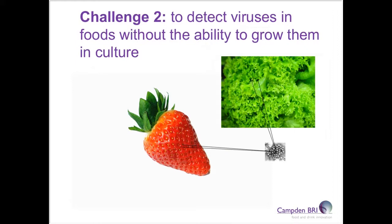The second challenge is detection of viruses in a laboratory setting. We know contamination occurs, but how can we detect it? Currently we cannot grow viruses in the lab like we can bacteria, so we have to directly detect them from the foods they are on. Since we are dealing with such small organisms, this can be difficult, but there are now methods available which can detect the presence of viruses on foods. This is a recent development in ISO methodology, now published as a full ISO method.